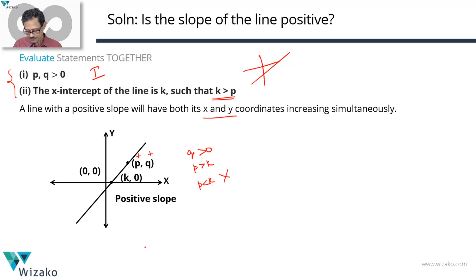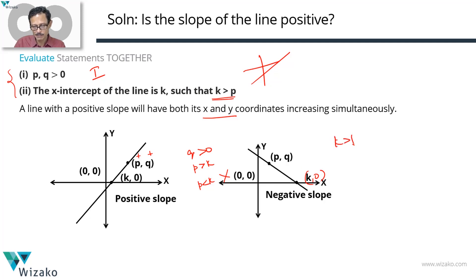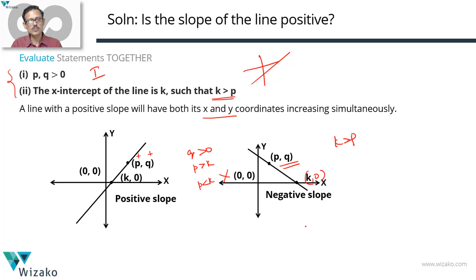Let's check whether a negative sloping line can satisfy both conditions. For a negative sloping line, as X increases, Y decreases. With P, Q as a first quadrant point — Q is positive — and the X-intercept at K, 0, we observe that K is to the right of P, so K is greater than P. Both conditions are satisfied. A positive sloping line cannot satisfy statement two's condition, but a negative sloping line can satisfy both conditions. So combining the two statements, we have a conclusive, definite answer of no.